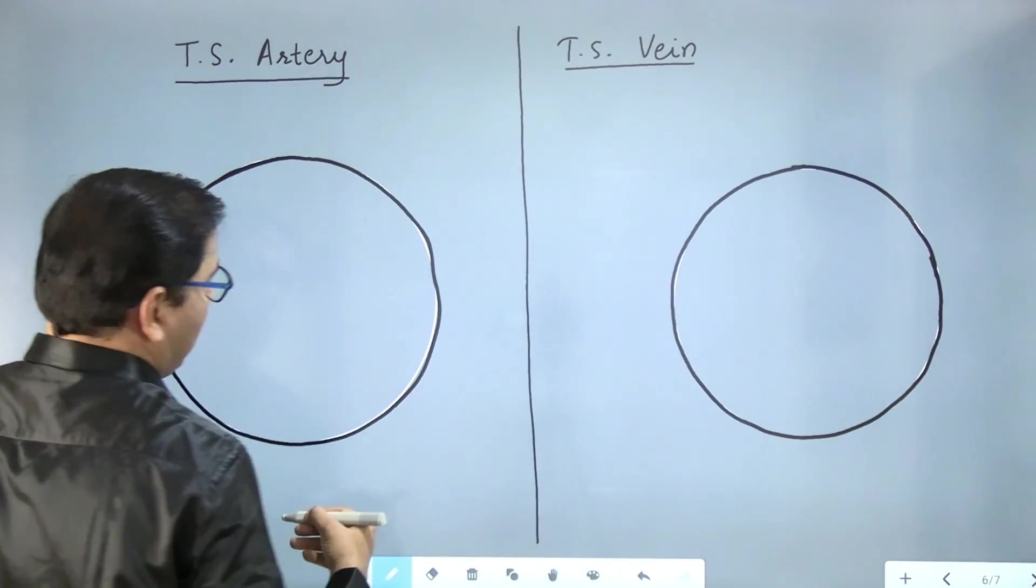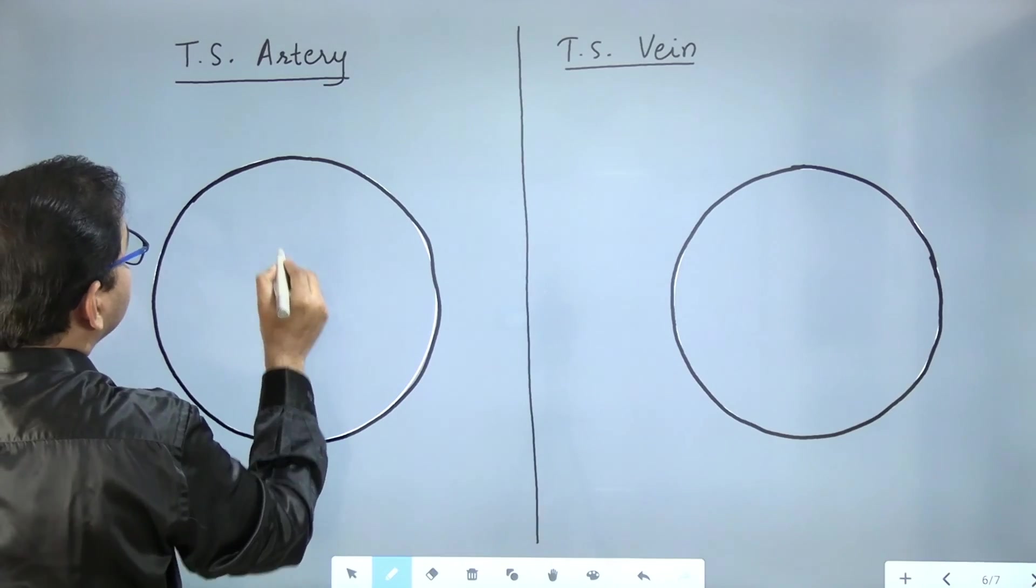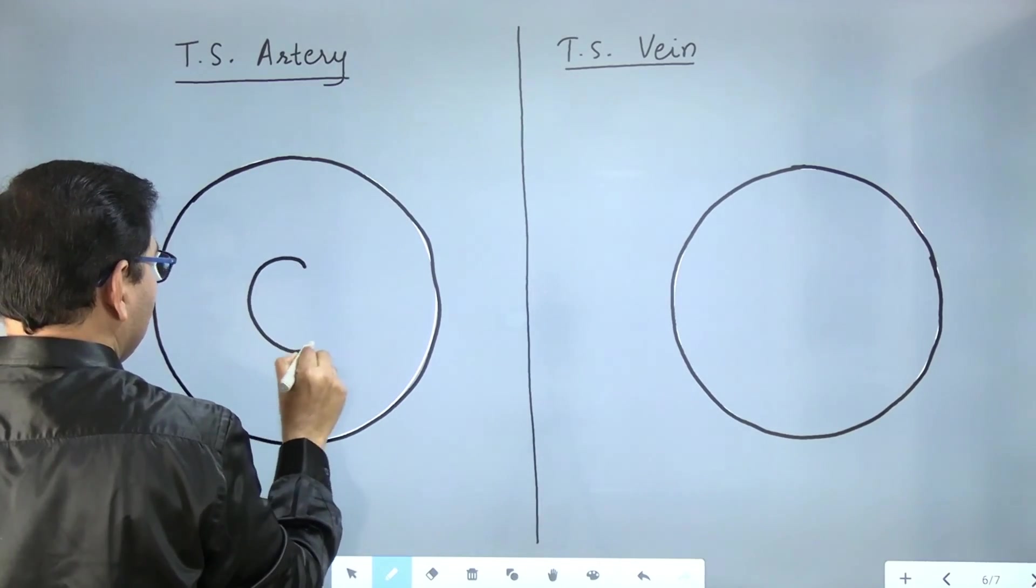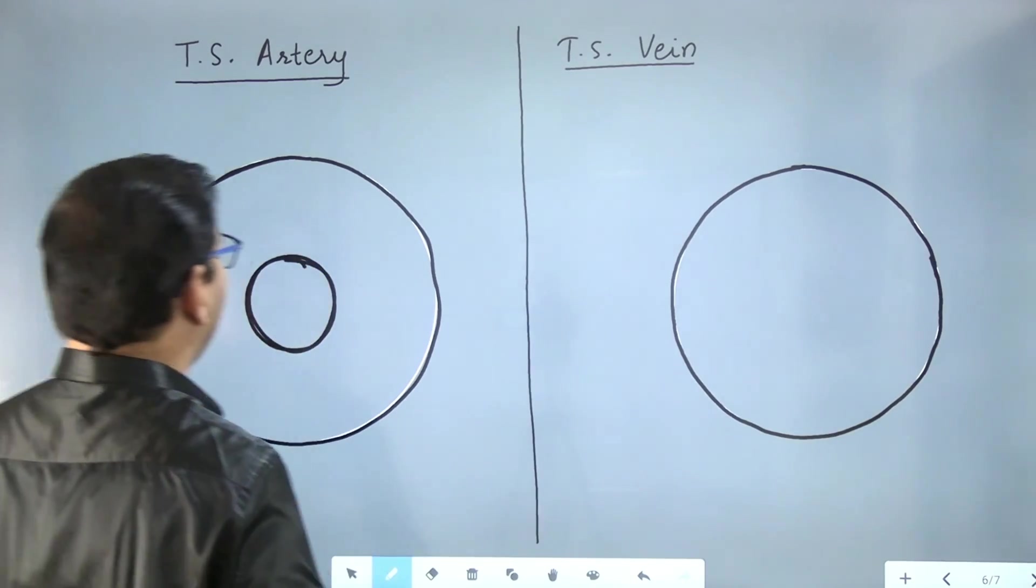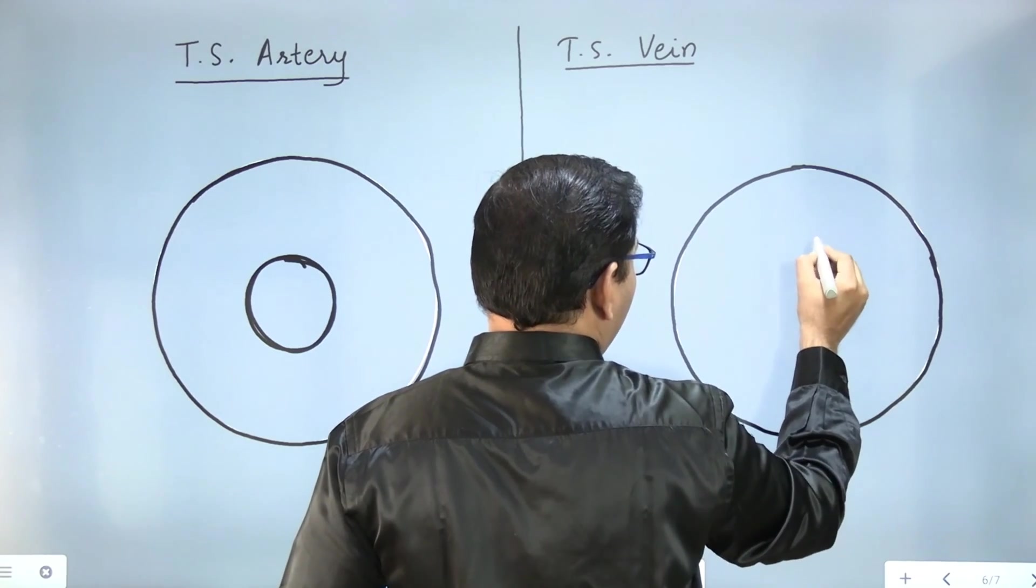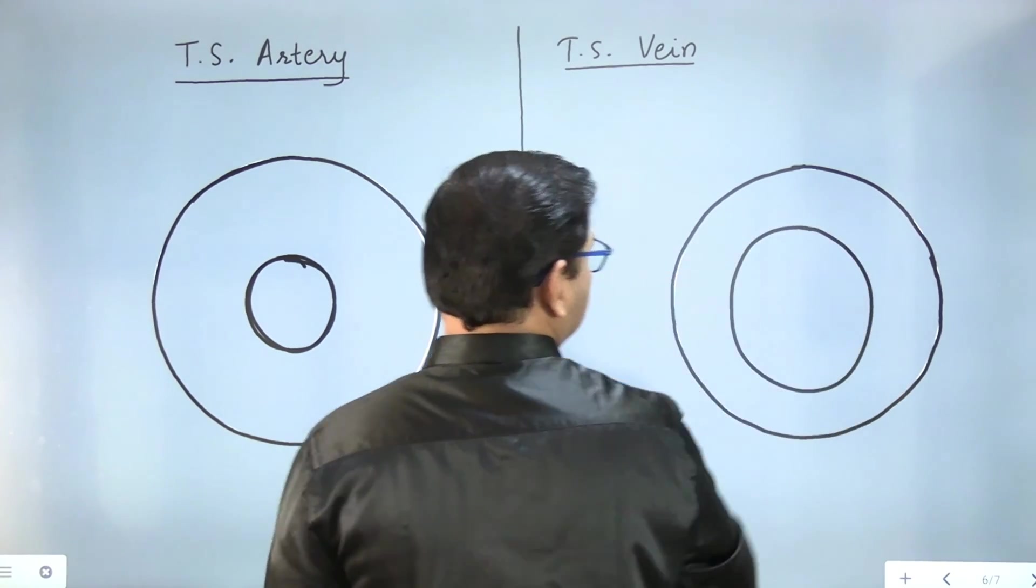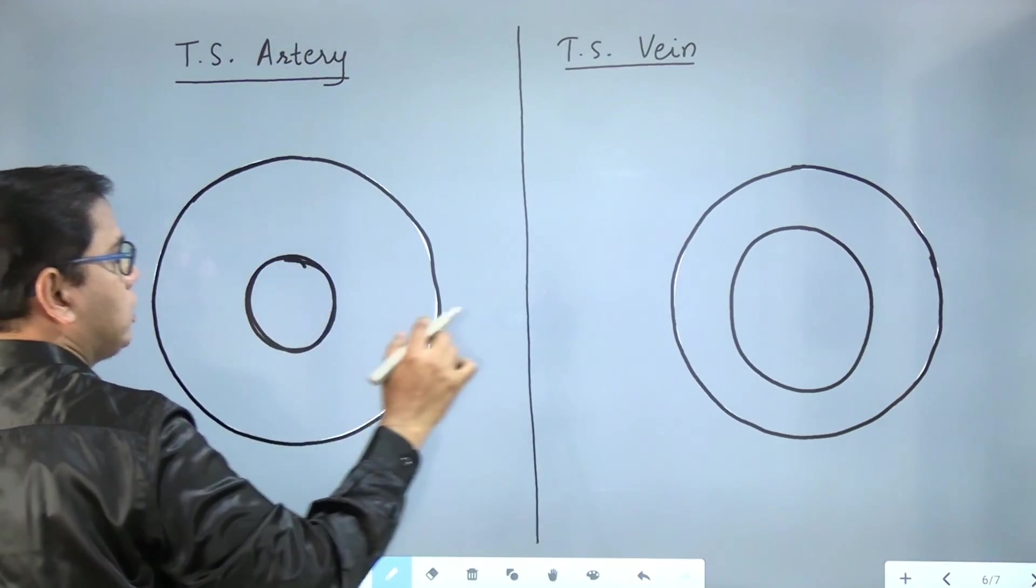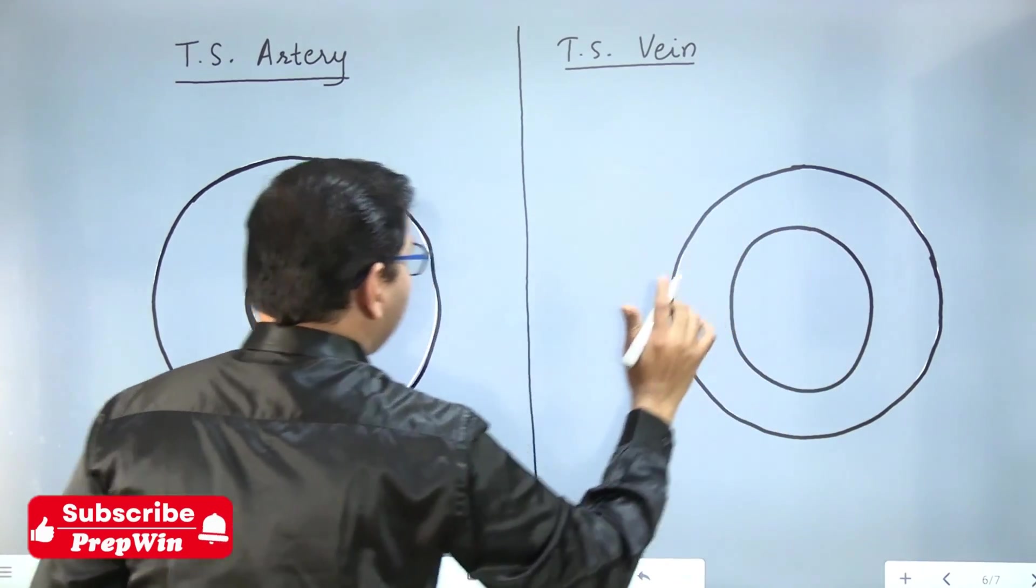Okay, so outermost layer here. We know that lumen of the artery is smaller. So smaller lumen of the artery and lumen of vein is bigger in size. Smaller lumen of artery, the innermost layer, and bigger lumen of the vein, the innermost layer.